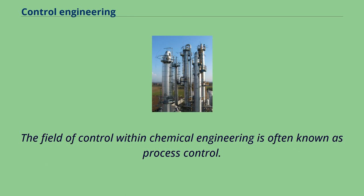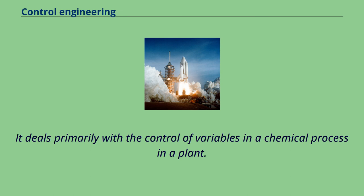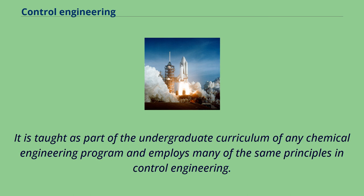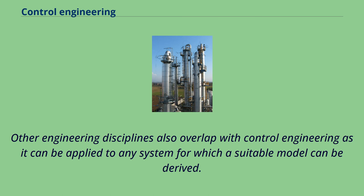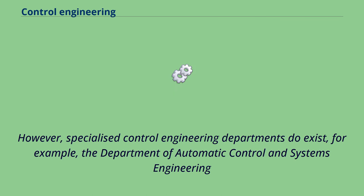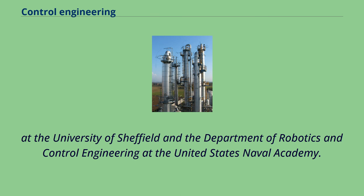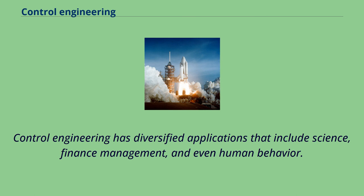The field of control within chemical engineering is often known as process control. It deals primarily with the control of variables in a chemical process in a plant, and is taught as part of the undergraduate curriculum of any chemical engineering program. Other engineering disciplines also overlap with control engineering, as it can be applied to any system for which a suitable model can be derived. However, specialized control engineering departments do exist, such as the Department of Automatic Control and Systems Engineering at the University of Sheffield and the Department of Robotics and Control Engineering at the United States Naval Academy. Control engineering has diversified applications that include science, finance management, and even human behavior.